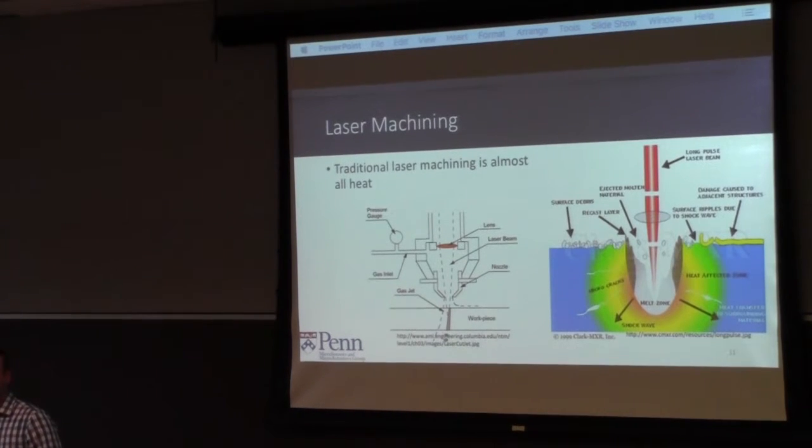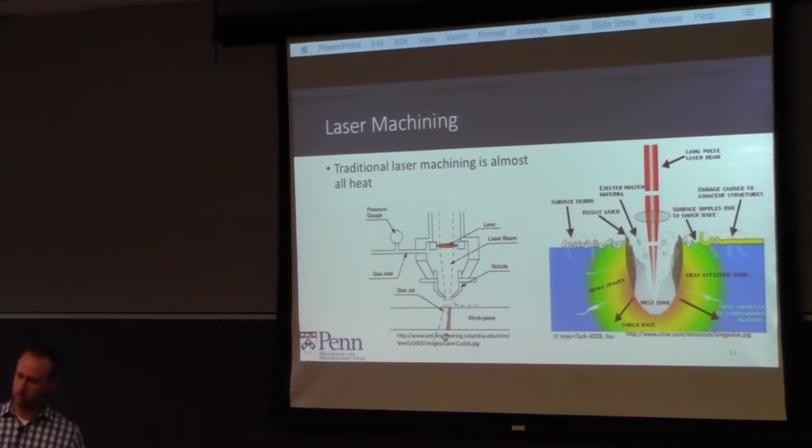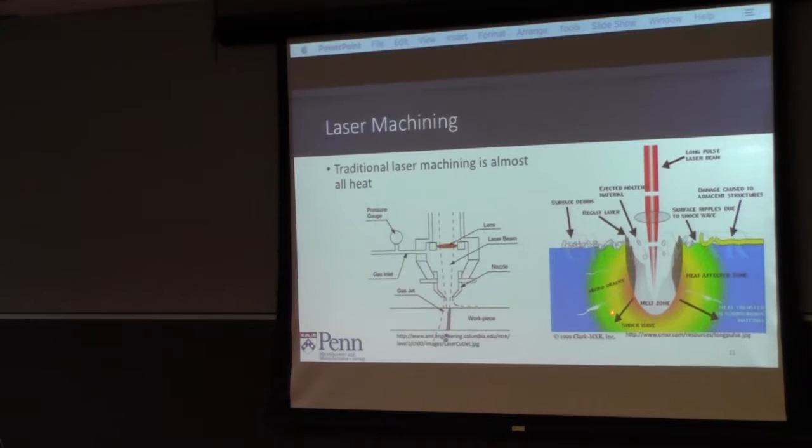A little background on laser machining. I did actually help bring the lasers to the Singh Center. Traditional laser machining for metals, as you machine the metal, takes that melt on the surface and drags it through the material. This isn't a good thing for heat, because that's pure heat. This is very traditional laser machining, but it gives you a good idea of what actually happens, such that you generate cracks in the material, there's a heat-affected zone, there's ejected molten material. There are a number of problems with this.